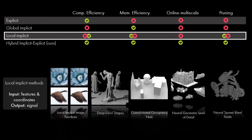Local implicit representations fit signals with coordinate-based networks or implicit functions that are localized, taking both features and coordinates as input. These architectures are usually more memory efficient than explicit representations, while also being more computationally efficient than implicit representations, as the signal is only evaluated locally using a subset of all trainable parameters. However, local implicit representations usually represent signals at a single scale, and depending on their architecture, may or may not allow pruning of empty space to more efficiently allocate network capacity.